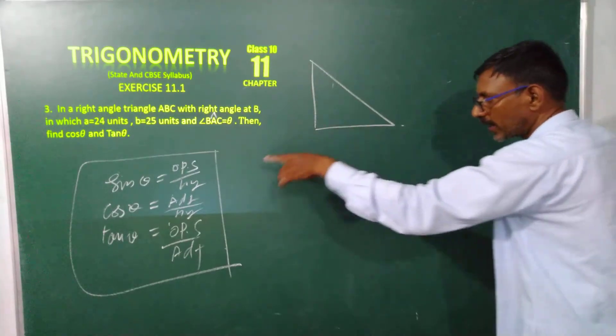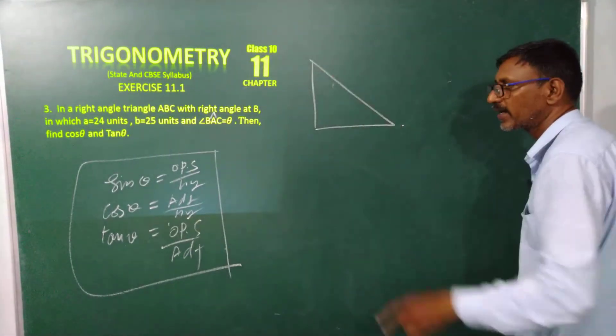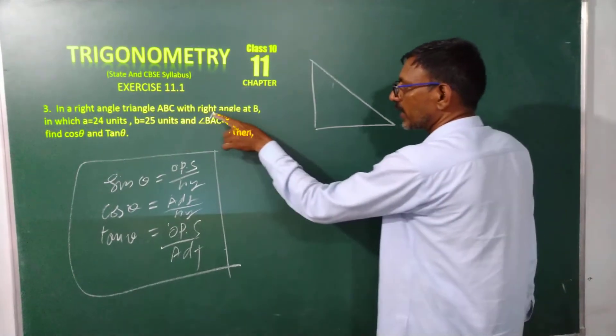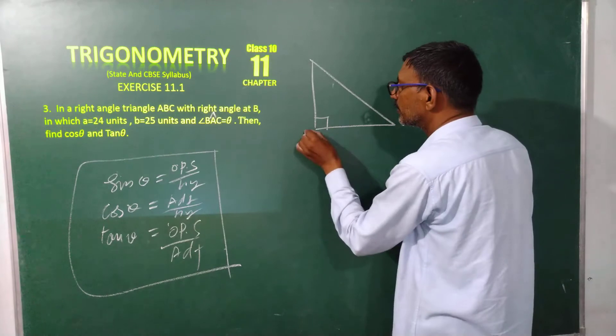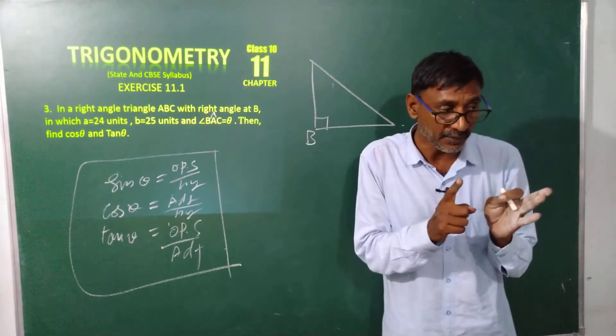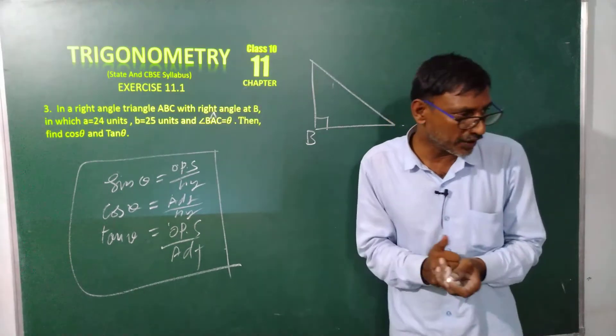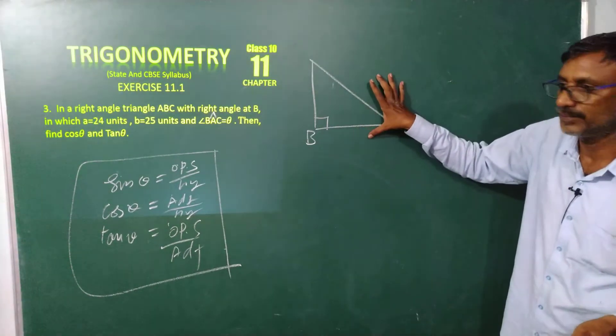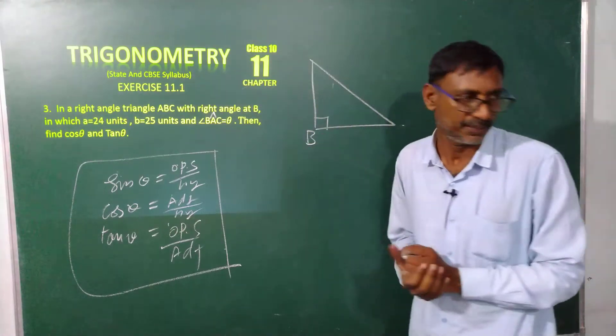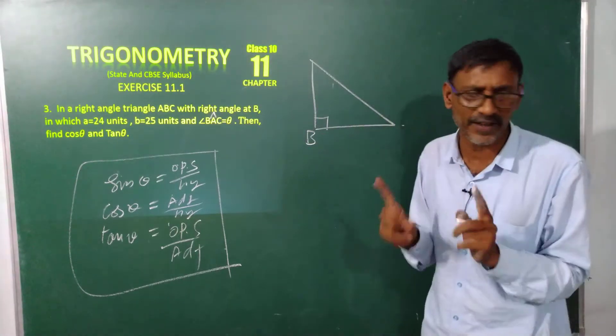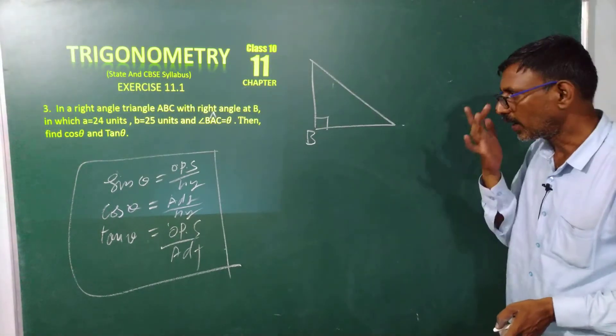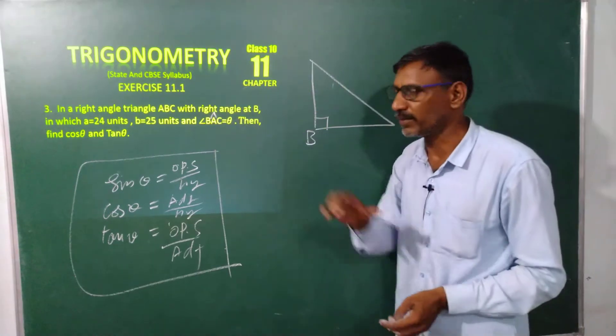First I told you clearly, all trigonometric ratios are derived from the right angle triangle. And right angle at B, so this is my B. Once again I am telling, read the question and draw the graph sketch first to understand how to solve the problem. This is very very important. Every time read the question and draw the graph sketch. And identify what is given in the question.